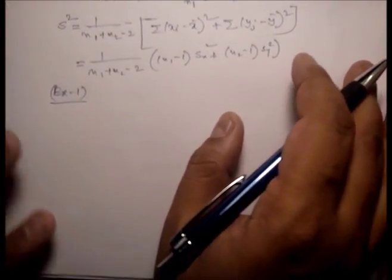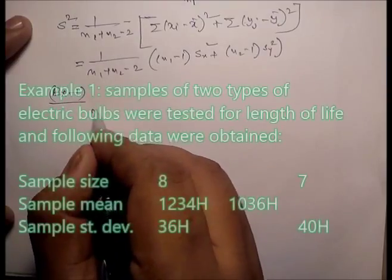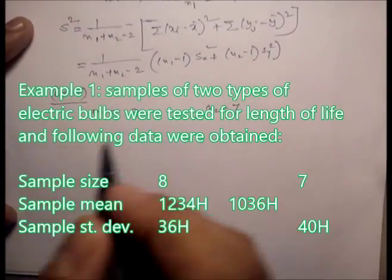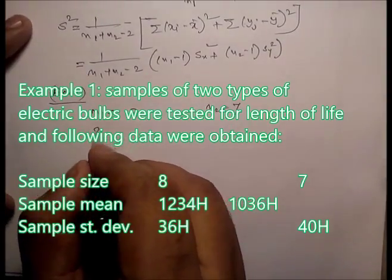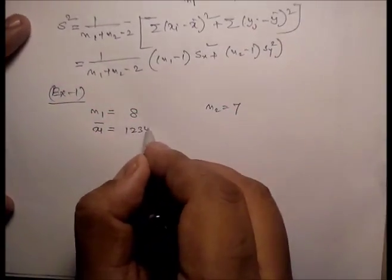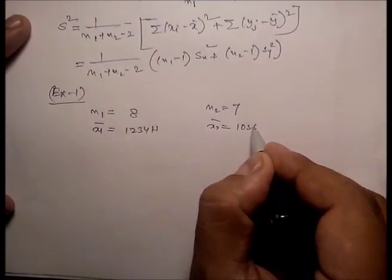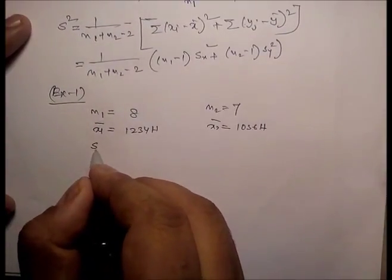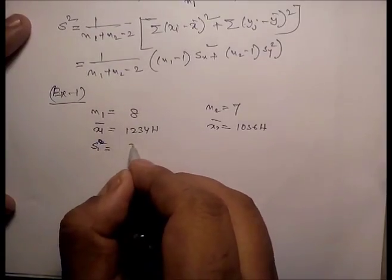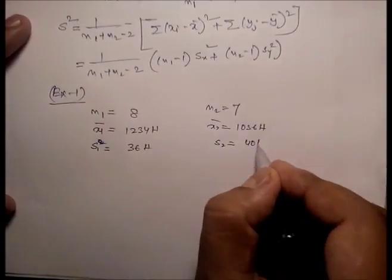Example 1: A sample of two types of electric bulbs are tested for length of life. Sample sizes are n1 equals 8 and n2 equals 7. Sample means are x1_bar equals 1234 hours and x2_bar equals 1036 hours. Sample standard deviations are s1 equals 36 hours and s2 equals 40 hours.